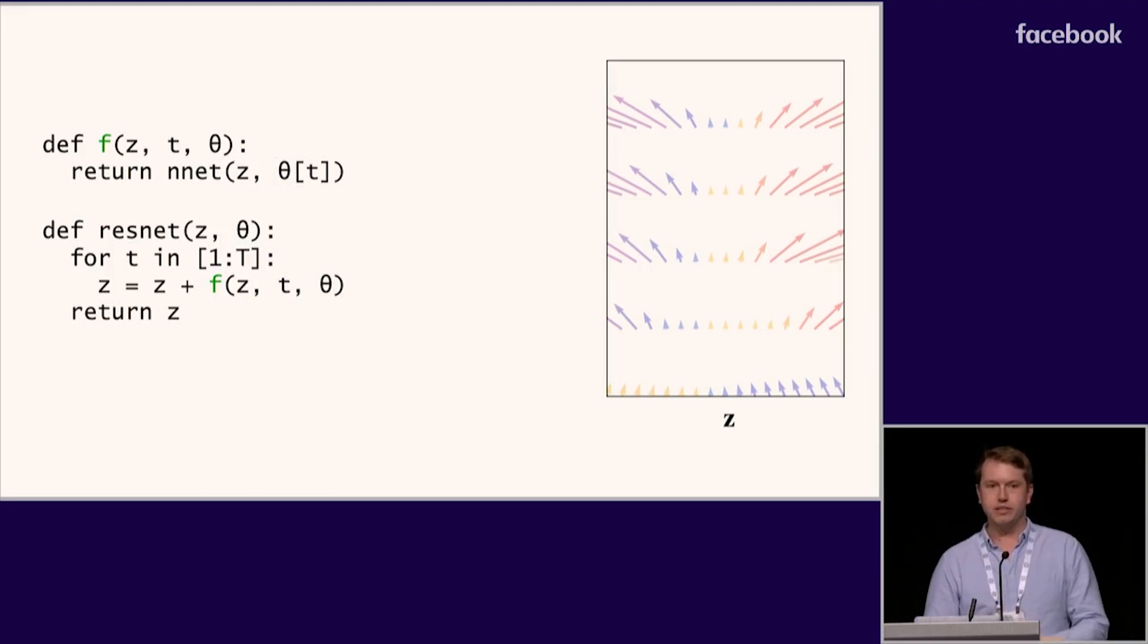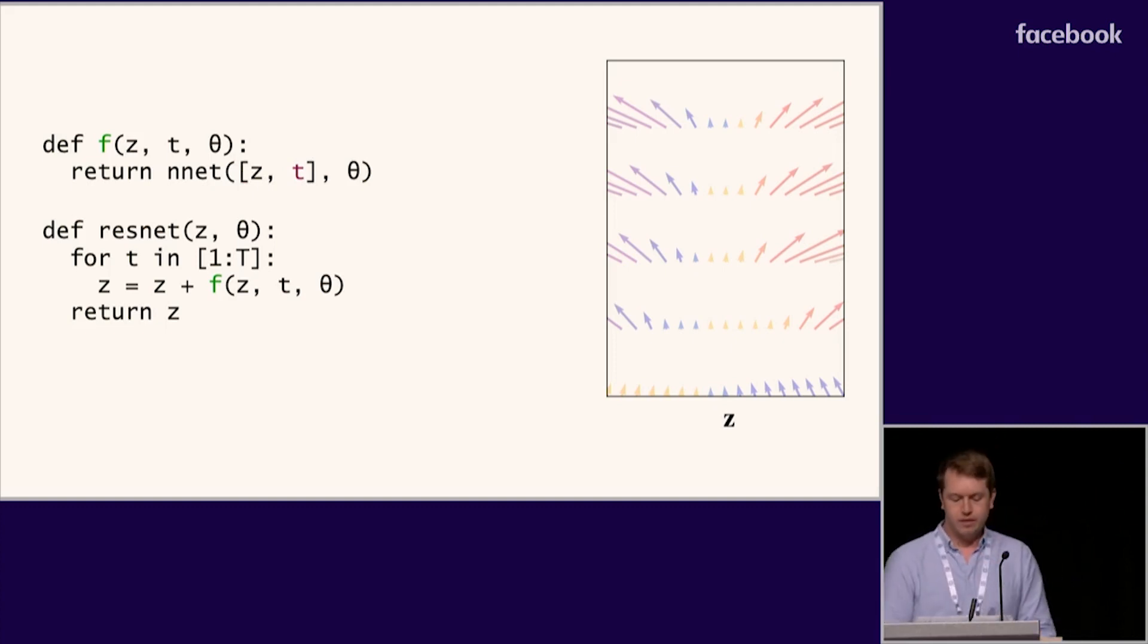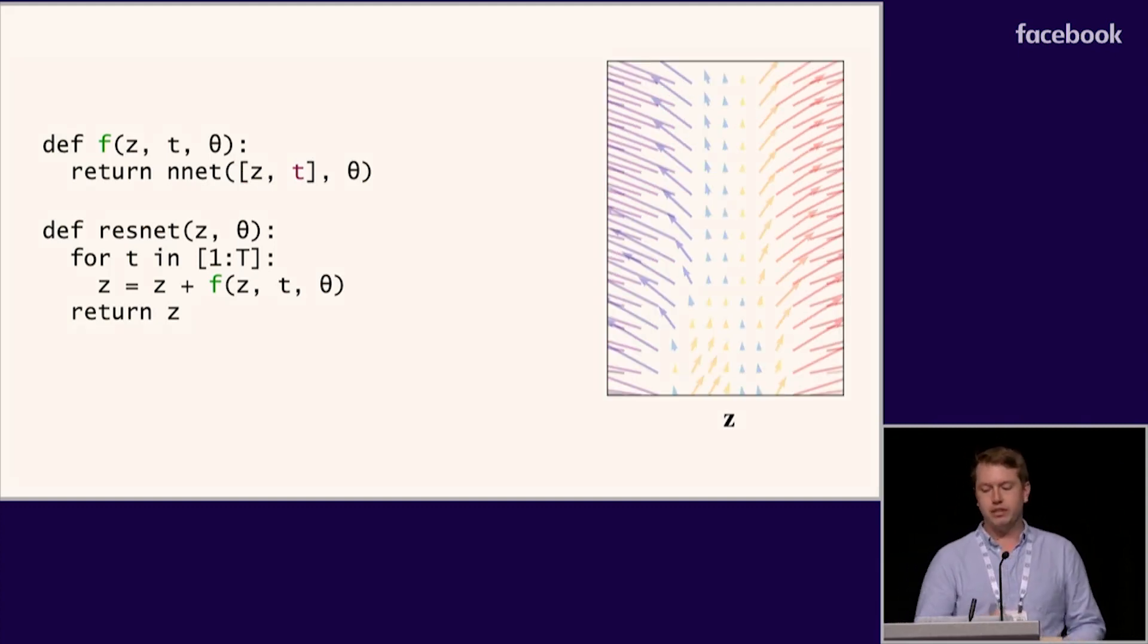But how far can we take this connection between neural networks and ODEs? Looking back at the code for a ResNet, we can actually make one simple change to make its dynamics continuously defined with depth, like an ODE. Looking at the ResNet block, we can simply feed the current depth to the ResNet block and use a fixed set of parameters for the entire depth. This change means that the dynamics are now defined even between layers and can change continuously with depth. So this model actually now defines an ordinary differential equation, but we're still using primitive Euler's method to solve it.